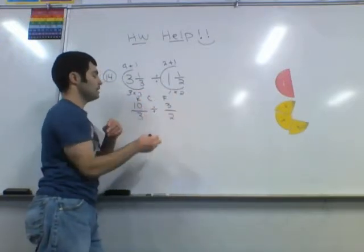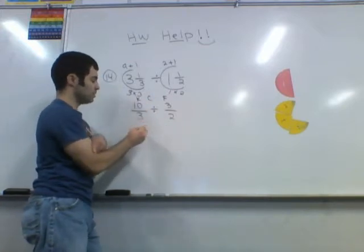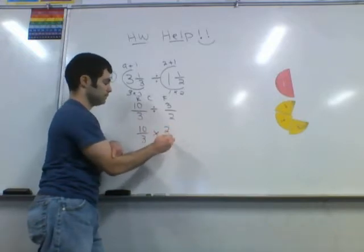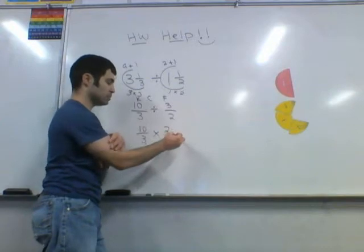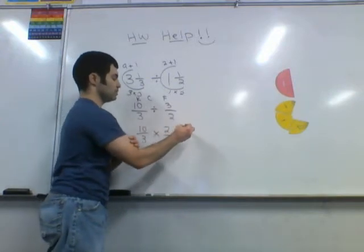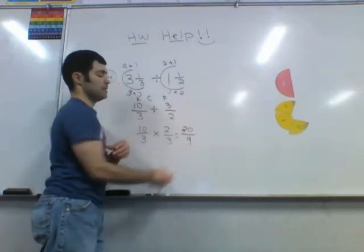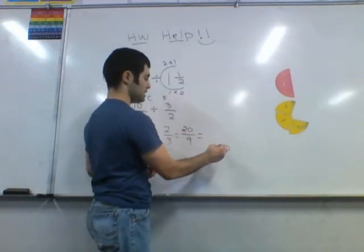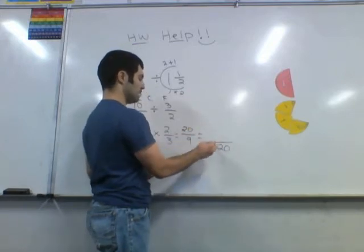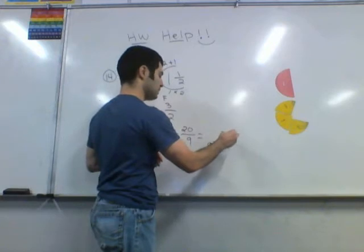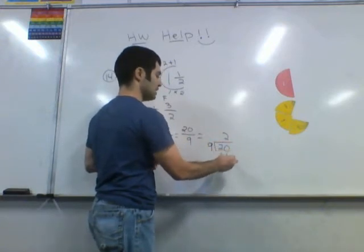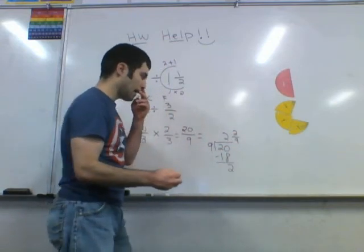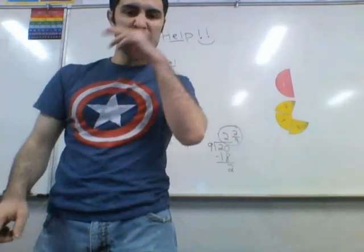You can't cross-cancel when you're dividing. But you can cross-cancel when you are multiplying. In this case, nothing cross-cancels, so you just multiply across. Ten times two is twenty, three times three is nine. Then you do top divided by bottom — the in-and-out method. Twenty divided by nine: nine goes into twenty two times, two times nine is eighteen, twenty minus eighteen is two. So two and two ninths is your answer. Alright, here's the lesson.